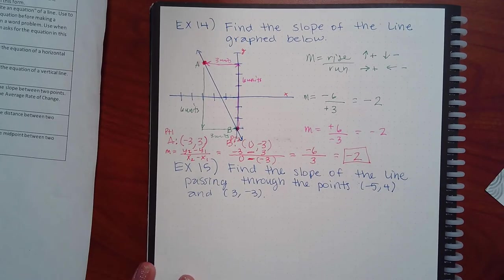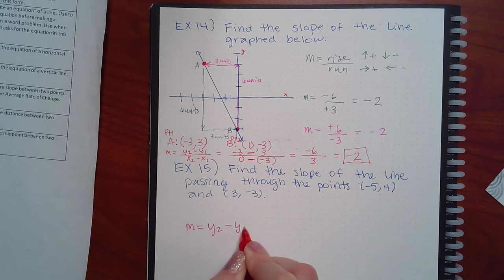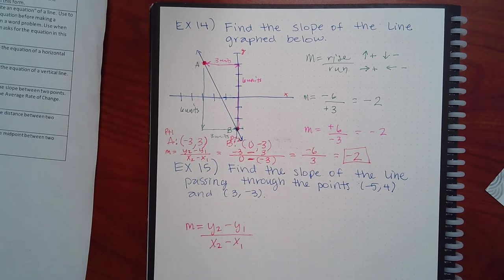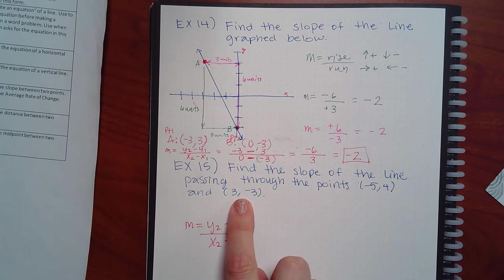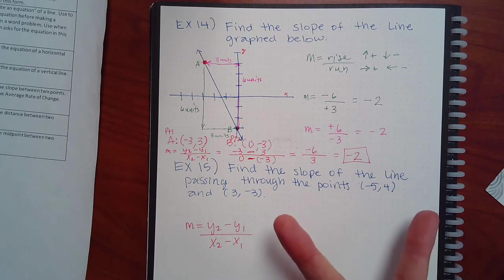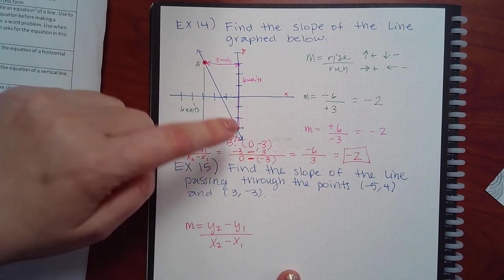This formula helps with example 15 because there's no graph. If I'm lazy, I'm not going to draw it and count. The formula works. The only thing is you have to decide which point is point 1 and which is point 2 before you start — you must commit. Whether I call negative five and 4 point 1 or point 2, I'll get the same answer; it's equivalent to traveling A to B or B to A.